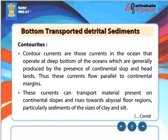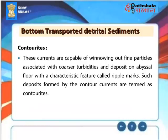Contour currents are those currents in the ocean that operate at deep bottoms and are generally produced by the presence of continental slopes and headlands, flowing parallel to continental margins. These currents can transport material present on continental slopes and rises towards abyssal floor regions, particularly sediments of clay and silt size. These currents are capable of winnowing out fine particles associated with coarser turbidites and depositing them on the abyssal floor with a characteristic feature called ripple marks. Such deposits formed by contour currents are termed contourites.